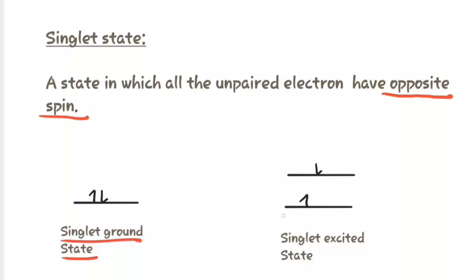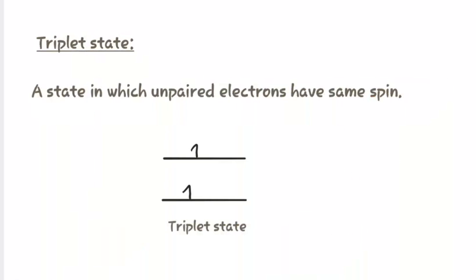When the unpaired electron in the ground state has the opposite spin to that of the unpaired electron in the excited state, it is known as the singlet excited state. Now, what is the triplet state? A triplet state is one in which the unpaired electrons have the same spin — that is, the unpaired electron in the ground state has the same spin as that of the unpaired electron in the excited state. Thus, this state is known as the triplet state.